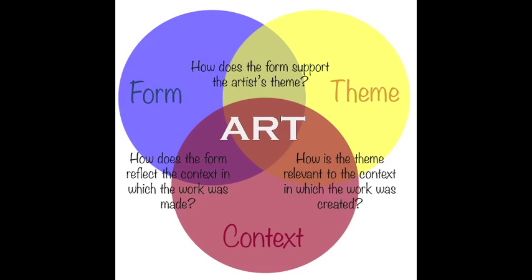So we've explored form, theme, and context as separate entities, but all these attributes interact simultaneously. By analyzing this interaction between form, theme, and context, perhaps the many layers of meaning in an artwork will be revealed and we can arrive at a deeper understanding of the artwork. Then possibly our search for meaning will bring us a more profound awareness of why art plays such an important role in understanding what it means to be human.